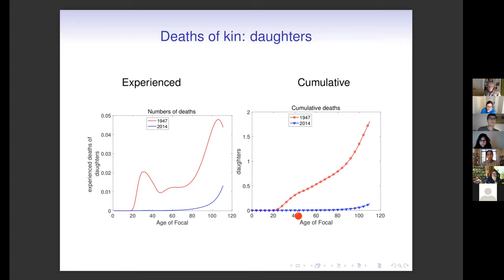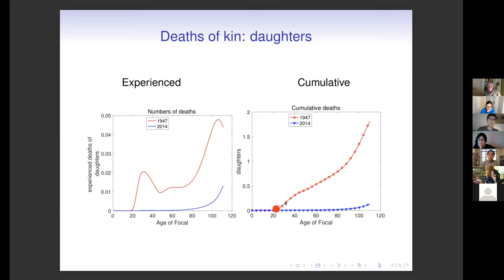This result for daughters in Japan under the two sets of rates shows that experiencing the death of a daughter under 2014 rates is extraordinarily rare until very late in focal's life — it was far more common under 1947 rates. The cumulative deaths of daughters under those two rates shows that focal under older rates lived in a very different world than under more recent rates.